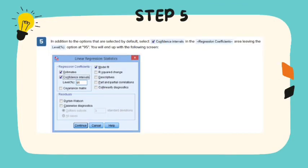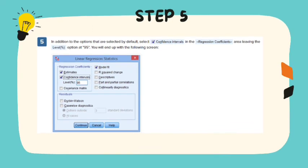Step 5, in addition to the options that are selected by default, select confidence intervals in the regression coefficients area, leaving the levels option at 95%. You will end up in the following screen.